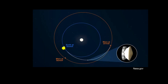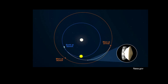NASA is researching how to send humans to Mars by as early as 2030. This is a complex mission because you're traveling for millions of kilometers, and it involves many things like how much fuel you need, how much oxygen we need, how much time we'll be spending over there, and how much radiation exposure humans will have.